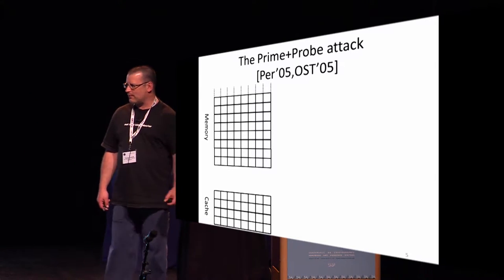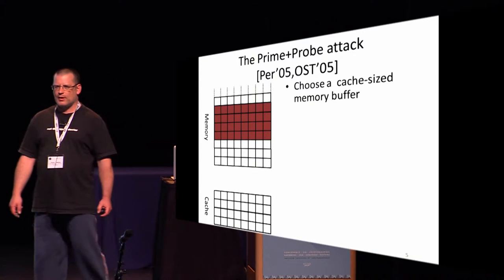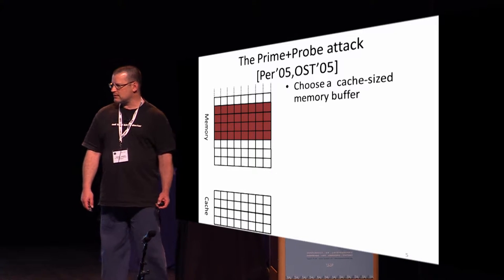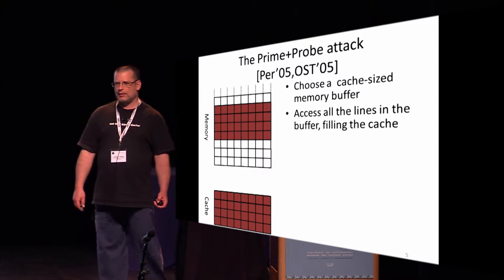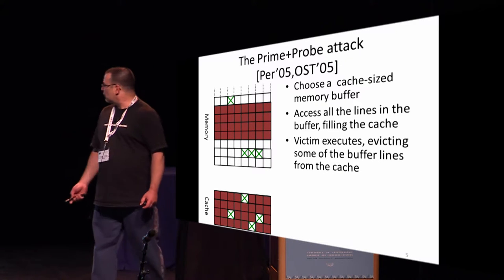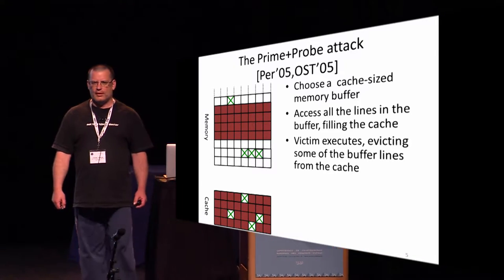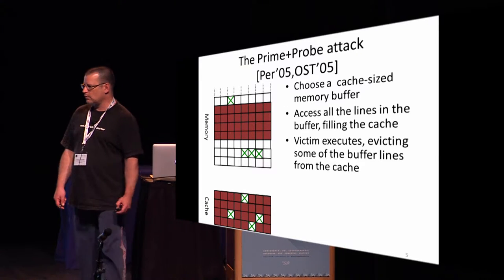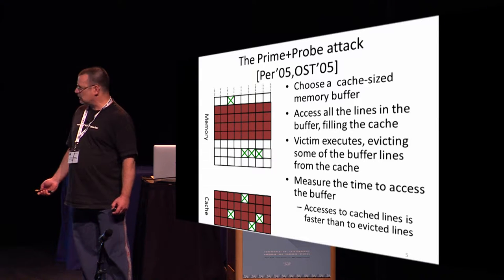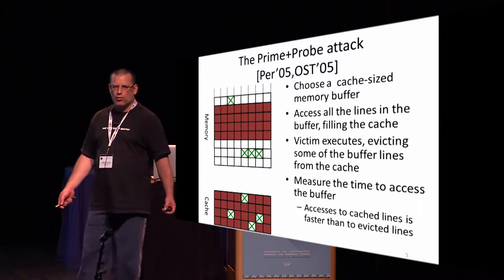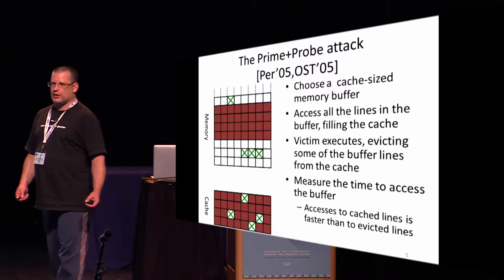The attack that Percival published — and in the same year Osvik, Shamir, and Tromer published the same attack — is very simple. The attacker picks a cache-sized buffer in memory and accesses this buffer so the buffer will be cached, filling the cache with the contents of this buffer. Then he lets the victim execute a bit. Whenever the victim accesses a line in memory, this line is brought into the cache, and when it is brought into the cache, that evicts one of the attacker's lines. What the attacker does now is read back the cache and find in which cache sets the reads are a bit slower — slower in the places where the victim accessed and replaced some of the attacker's memory. So the attacker can find out which cache sets the victim has accessed.